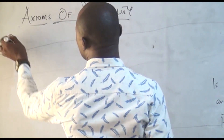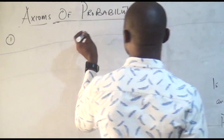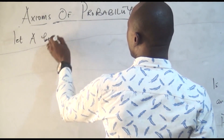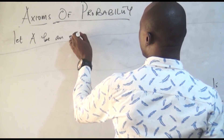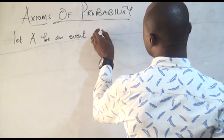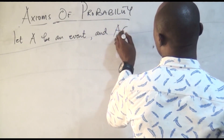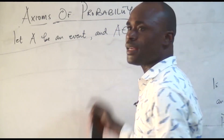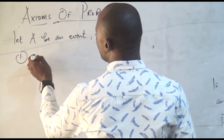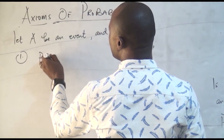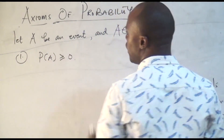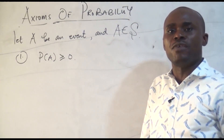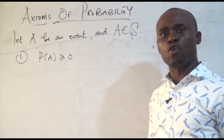The first axiom, which is very important, is that probability — let A be an event, and A be a member of the set S. Remember, the set S is the sample space. So, the first thing we note is that the probability of an event must be positive in value. You cannot have a negative probability. Probability must always be positive.